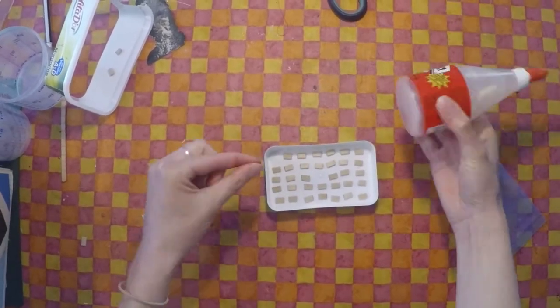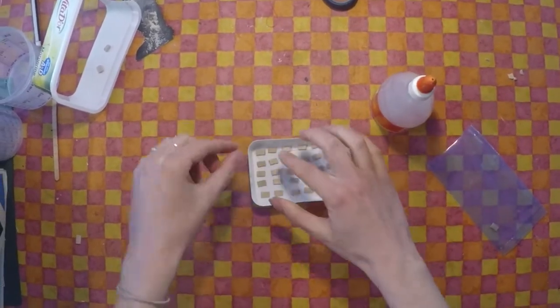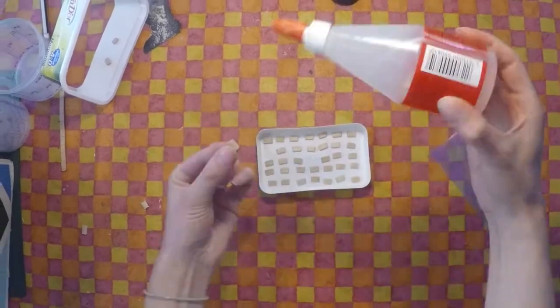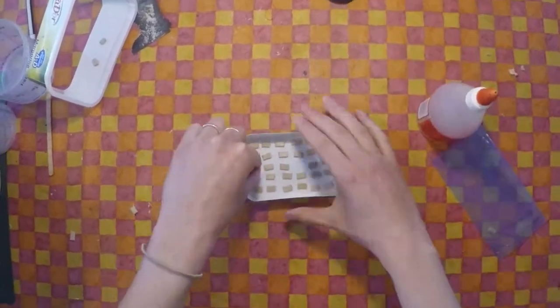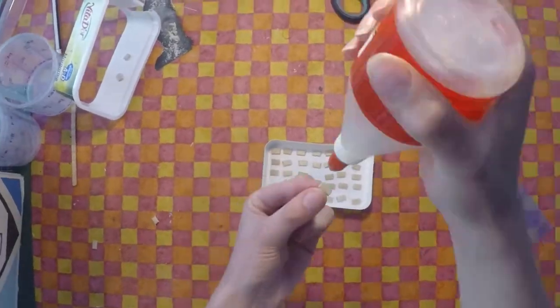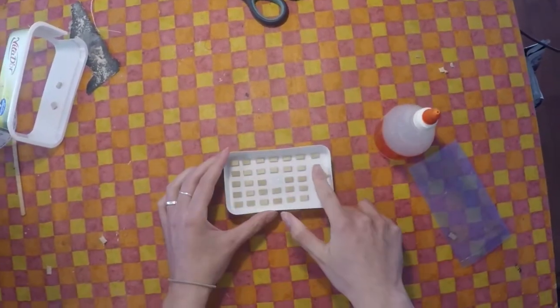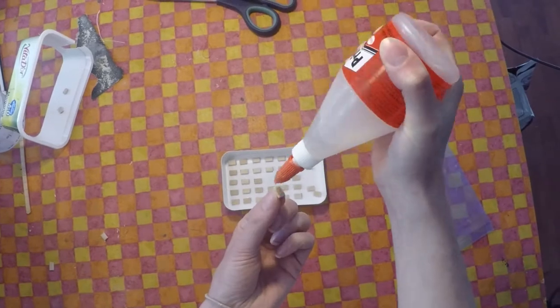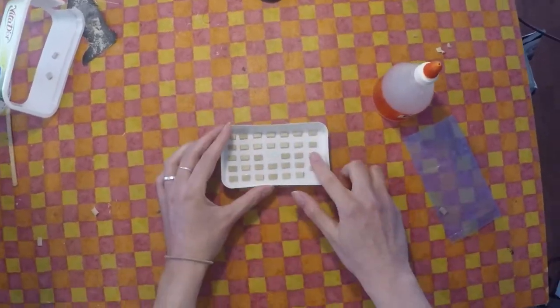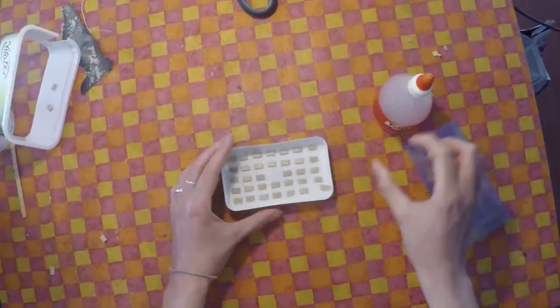Then I glued the pieces to the bottom of the container. Tried to glue them as flat to the surface as possible. In the middle of my container was a small bump in the plastic, so I left that space open.